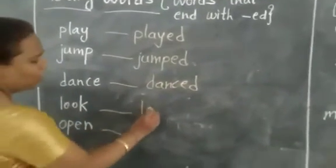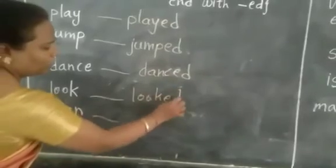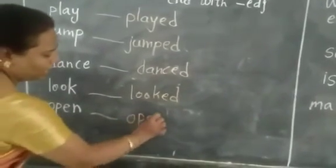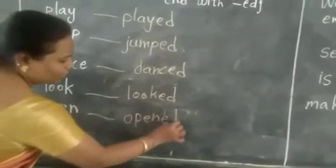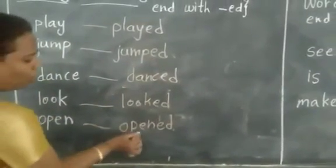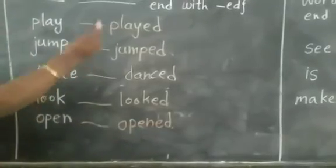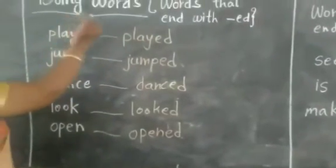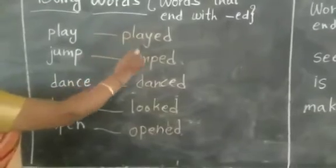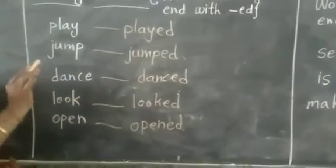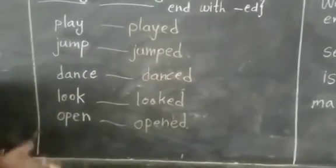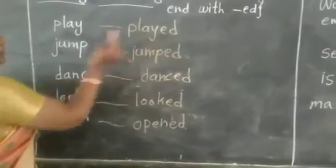Look — L-O-O-K-E-D. Open — O-P-E-N-E-D, add ED. So these words we will use in the past tense. We use ED words for doing words — we will add ED to the doing words. Then these words will be used in the past tense. Whenever action is done, completed, we use ED words.